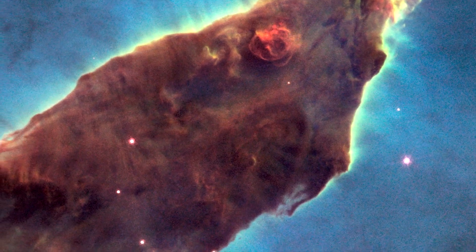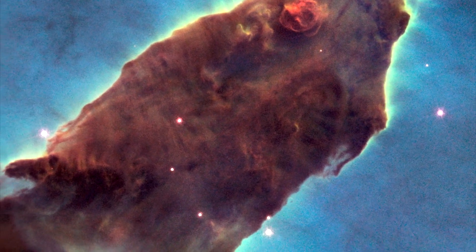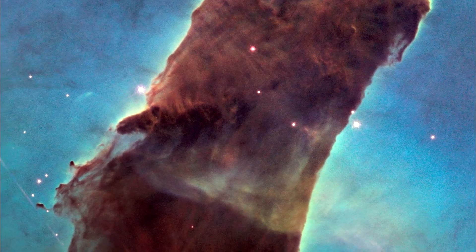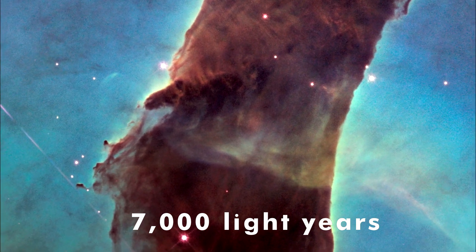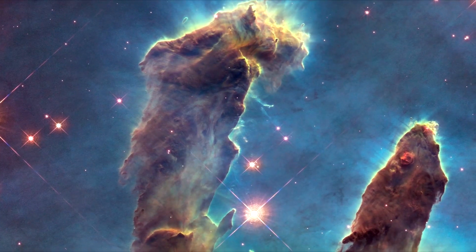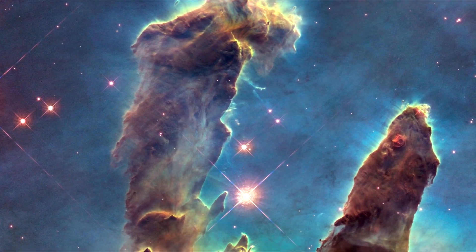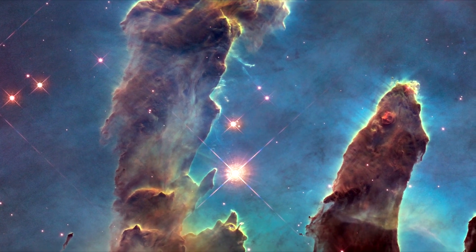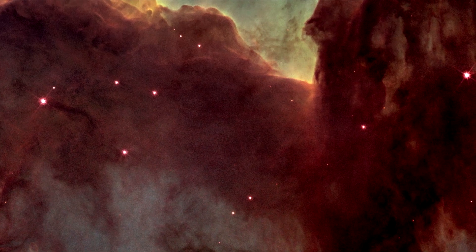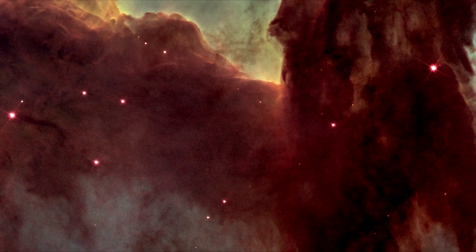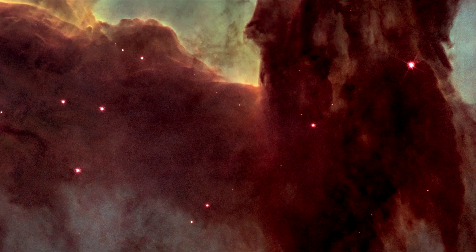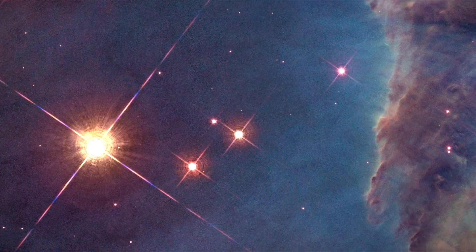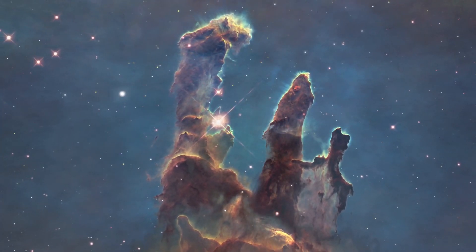The Eagle Nebula lies in the direction of the constellation Serpens the Serpent. It's about 7,000 light-years away, and amateur astronomers can view the nebula with low-powered telescopes or with a pair of binoculars. You'd be able to see approximately 20 stars clearly, surrounded by gas, dust and the light of dimmer stars. Under clear and dark viewing conditions, observers may also glimpse the nebula's famous three pillars.